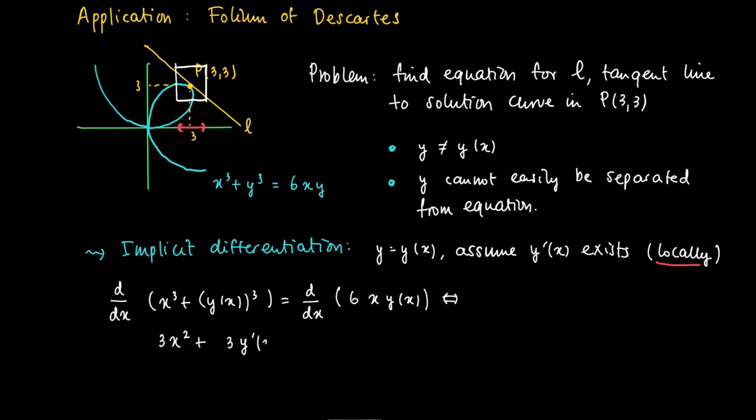So we get 3x squared as a derivative of the cubic function x to the power of 3. And we get 3y prime times y(x) squared as a derivative of y(x) to the power of 3. And on the right-hand side, we use a product rule. First, we differentiate with respect to x, which gives 6 times y(x). And the second term, we take a derivative of y. So we get 6x times y prime.